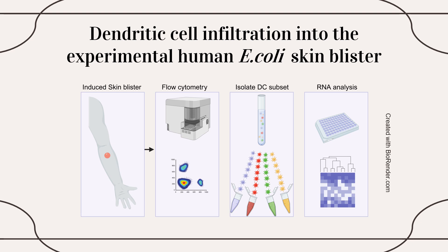To investigate the role of the circulating CDC compartment during inflammation, we used the human experimental skin blister model to examine the kinetics and functions of DC subsets in response to a bacterial insult in healthy individuals. A blister was provoked following an intradermal injection of dead E. coli into the forearm of healthy volunteers, and the blister content was then examined by flow cytometry and single-cell RNA sequencing.